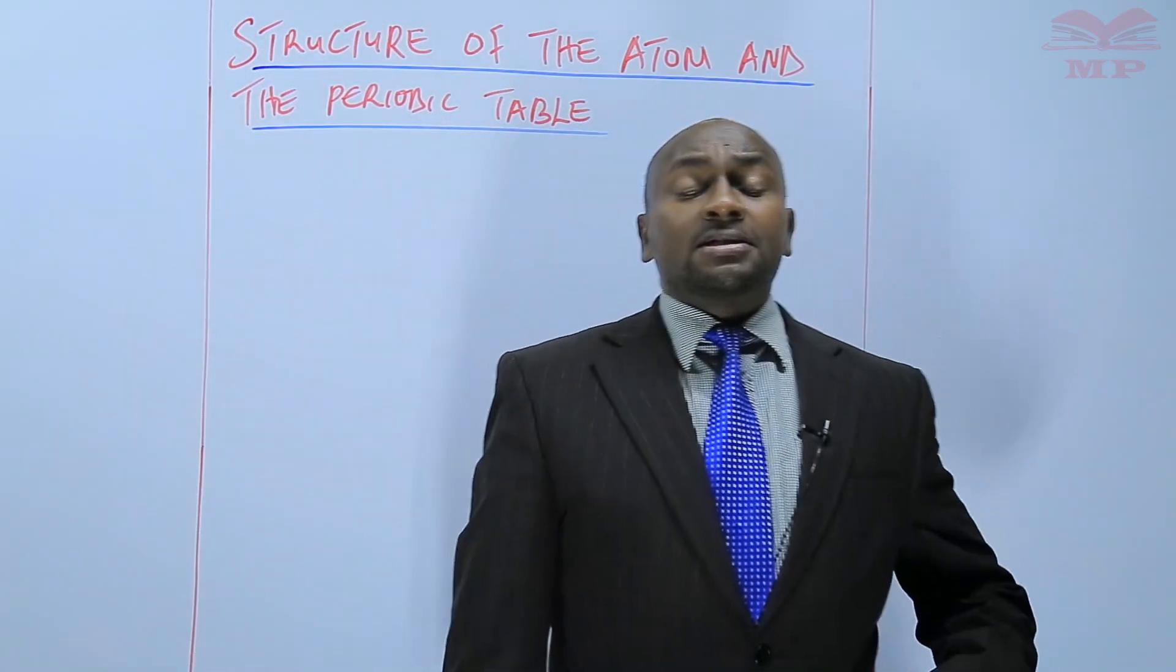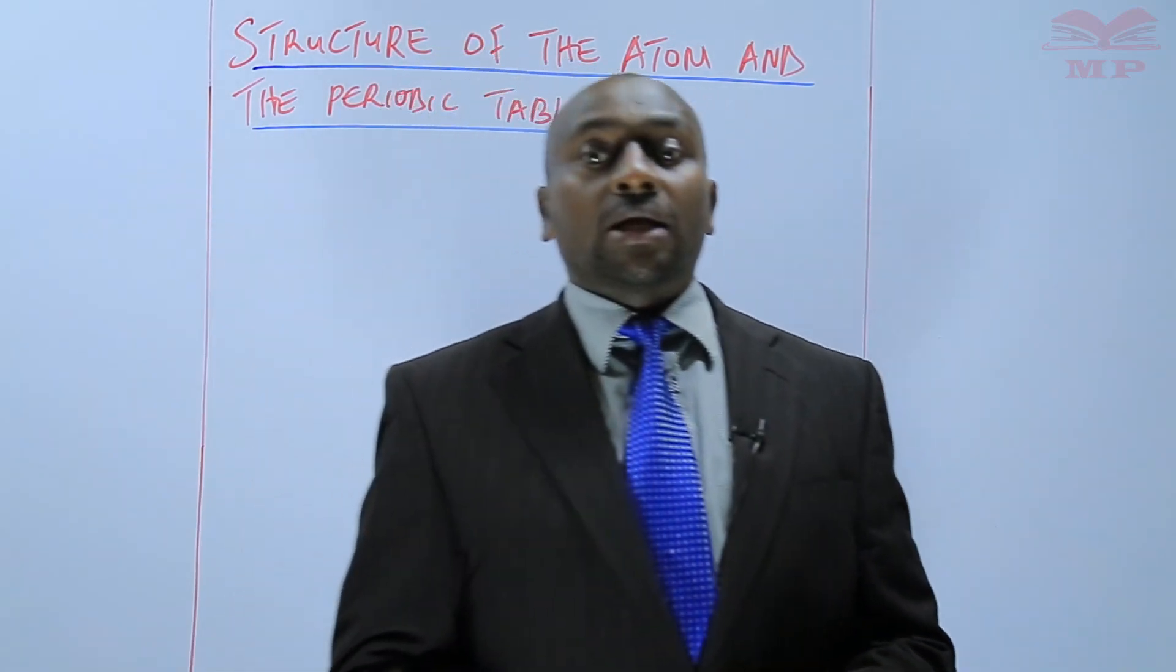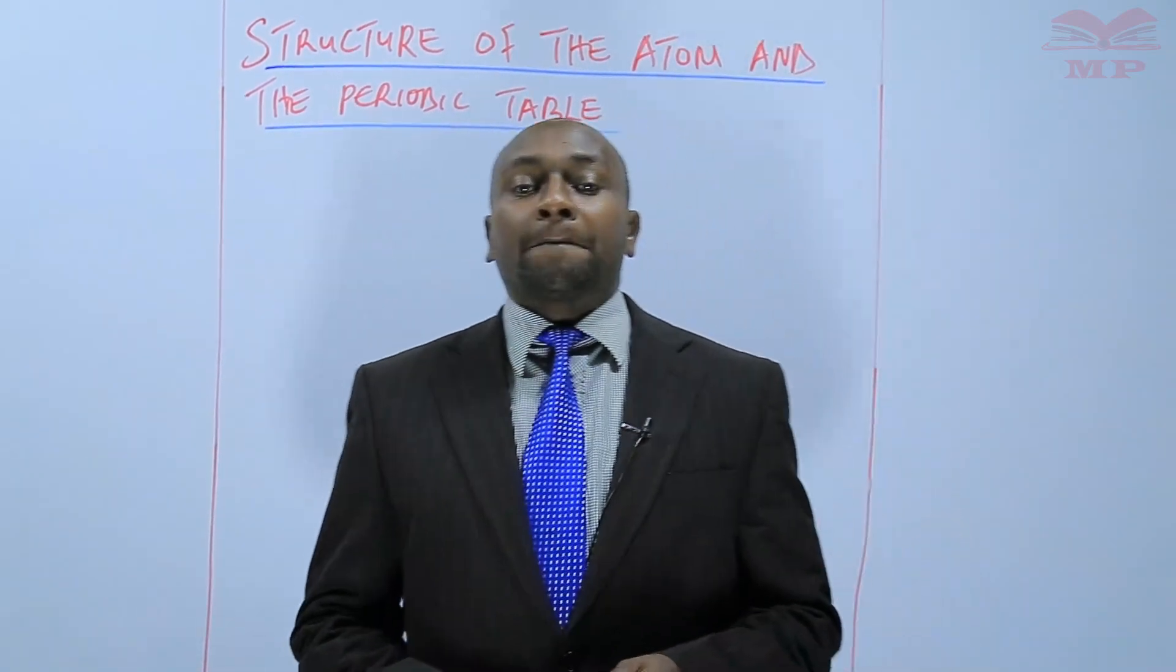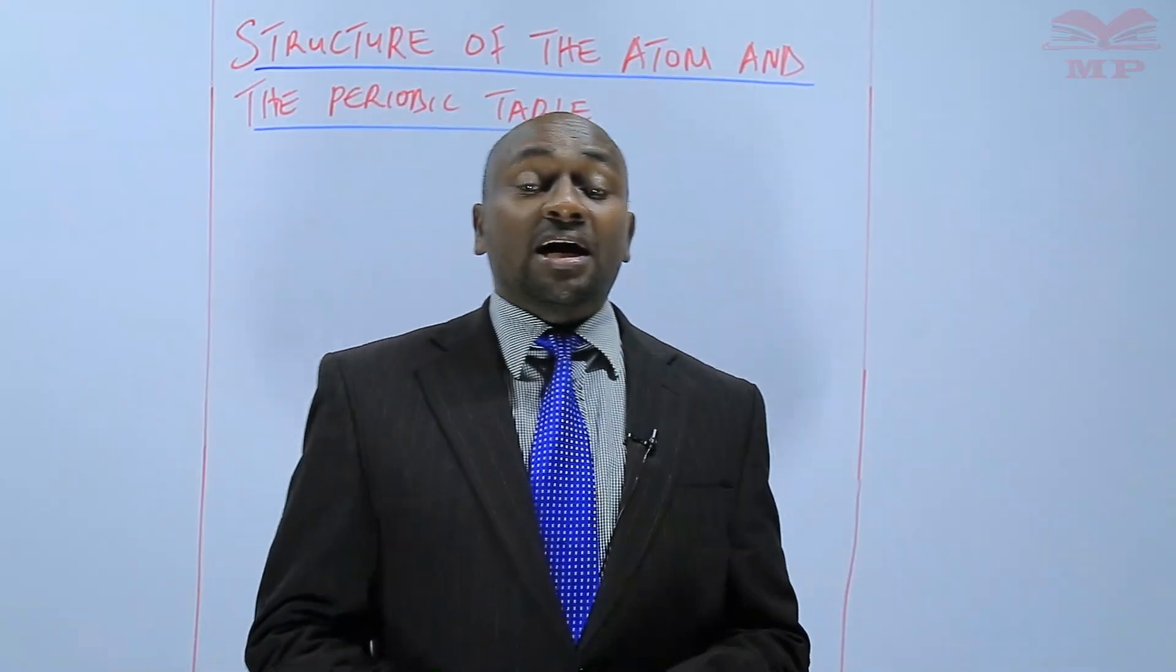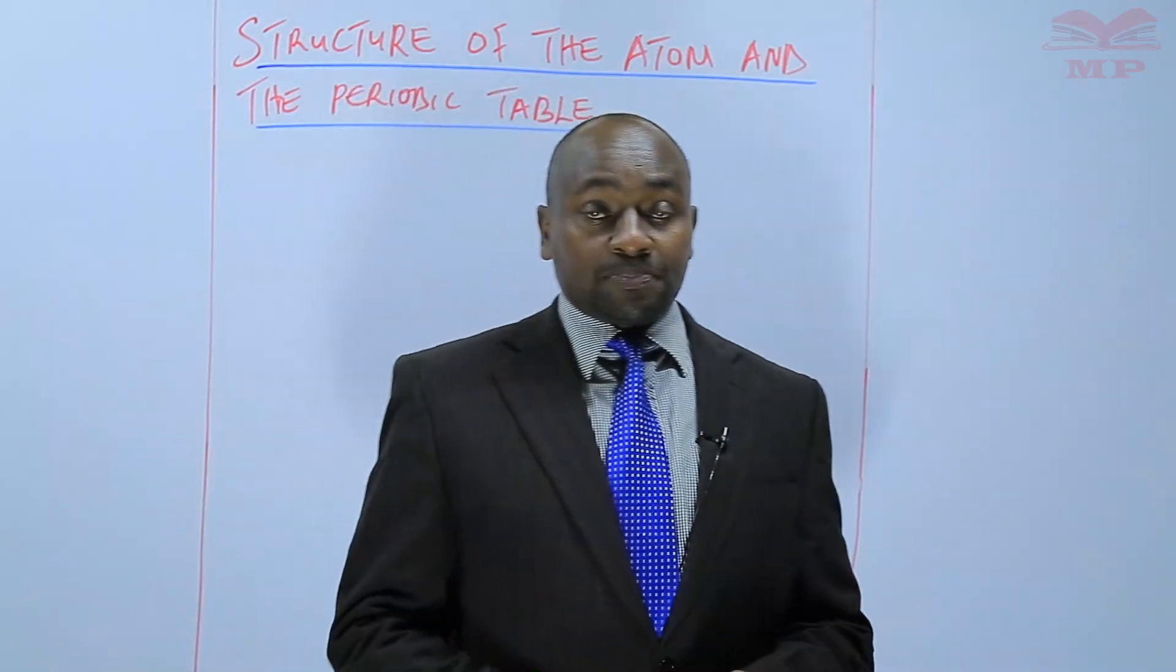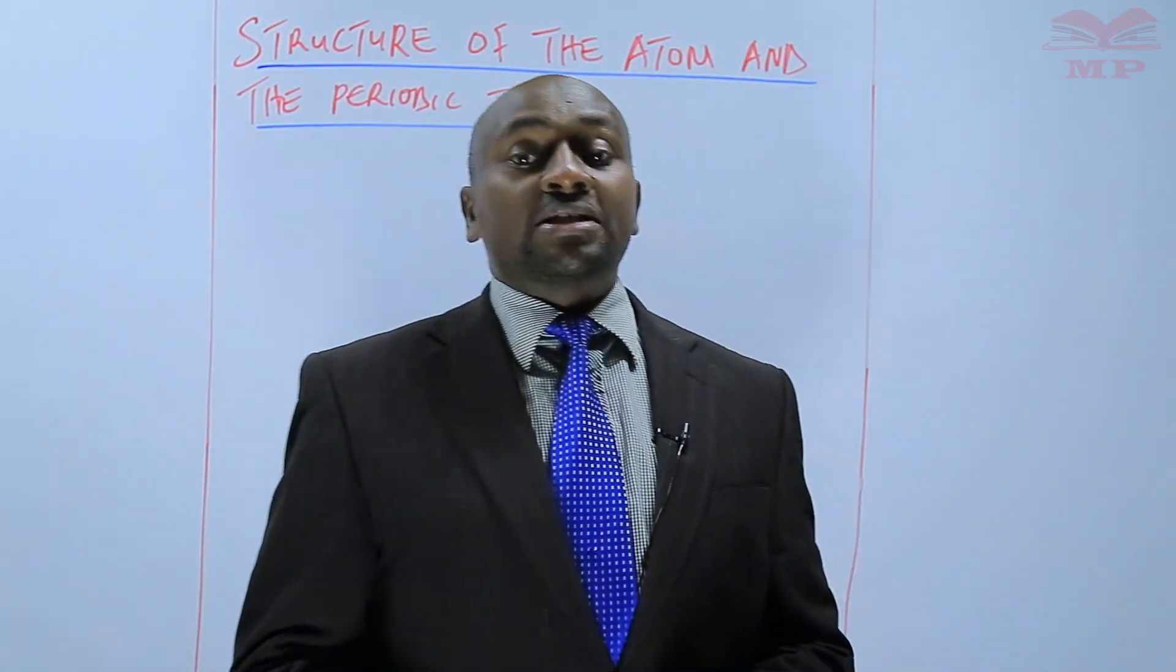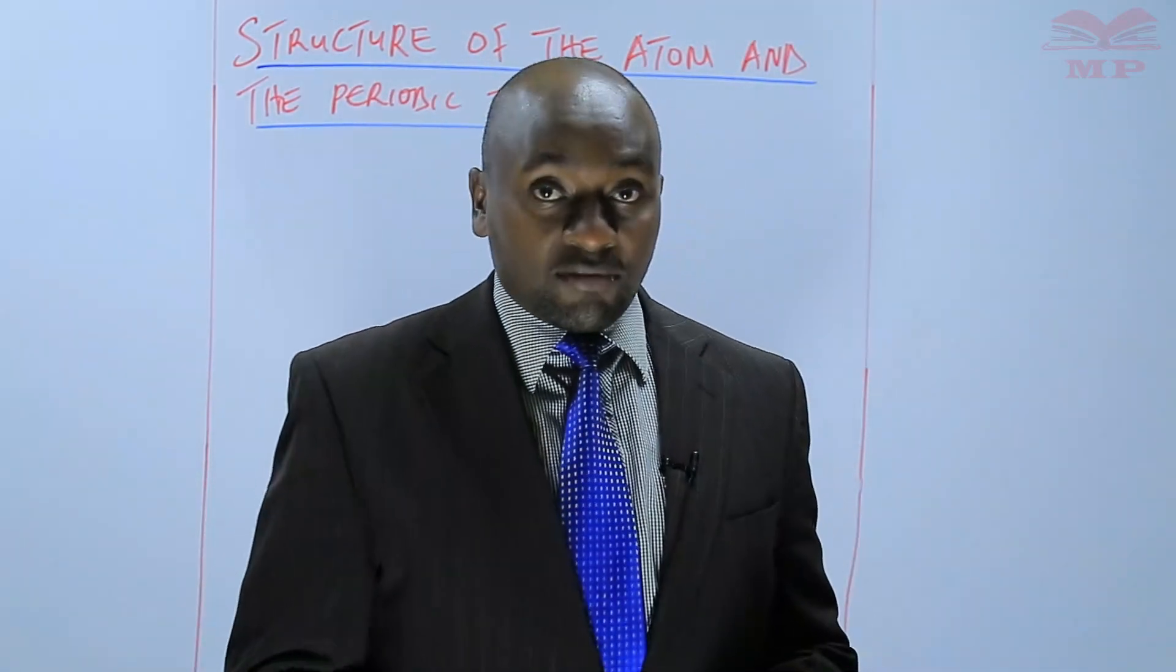During our last lesson, we distinguished between a group and a period. We said that members of the same group have the same number of electrons in the outermost energy level. On the other hand, members of the same period have the same number of occupied energy levels.